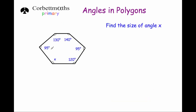So if we add up the five angles we're given — 130, 140, 95, 120, and 95 — just make sure you've got them all, because sometimes students miss one out or write the same one down twice. If we add up those five angles and take that away from 720, we'll find the size of angle x.